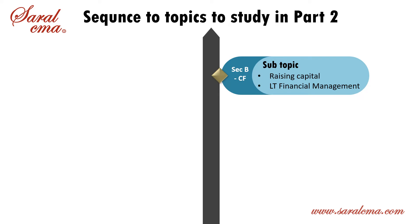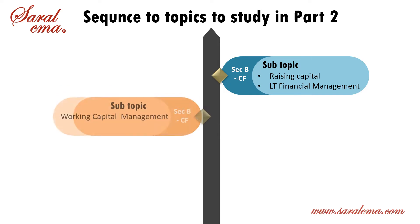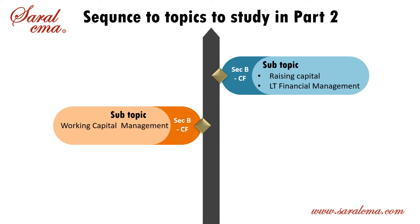Once the company gets finances, it will take two kinds of decisions: Short-Term Decisions and Long-Term Decisions. For Short-Term Decisions, study Working Capital Management in the Corporate Finance section.